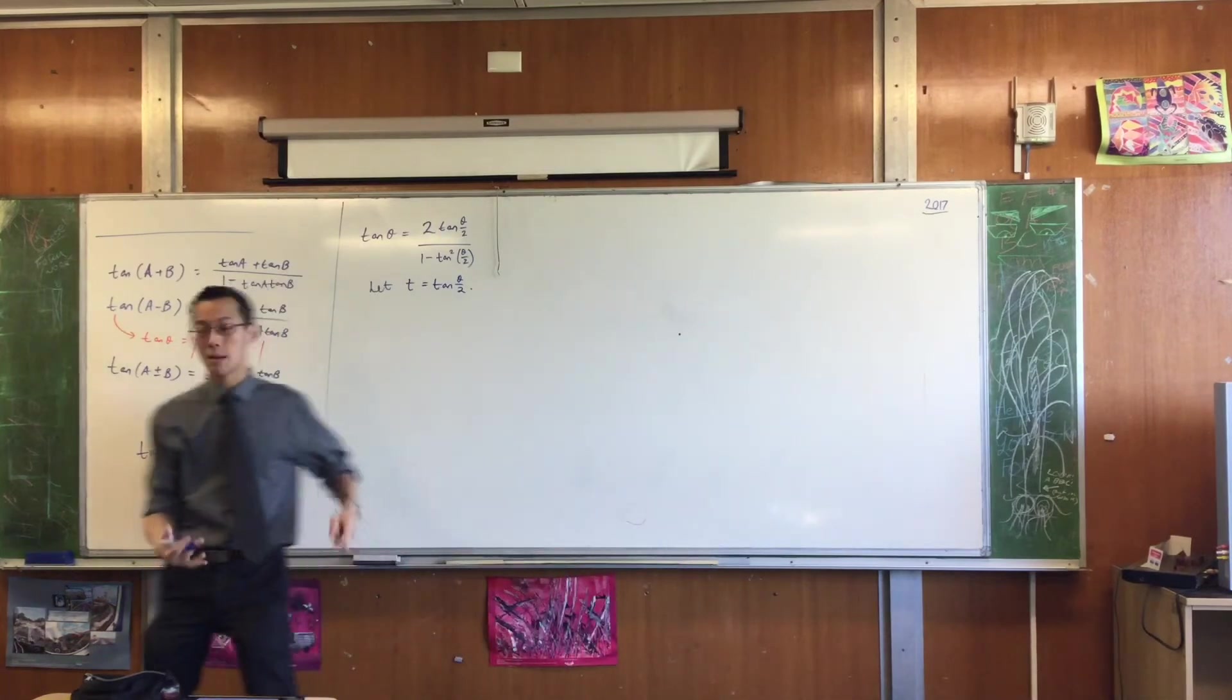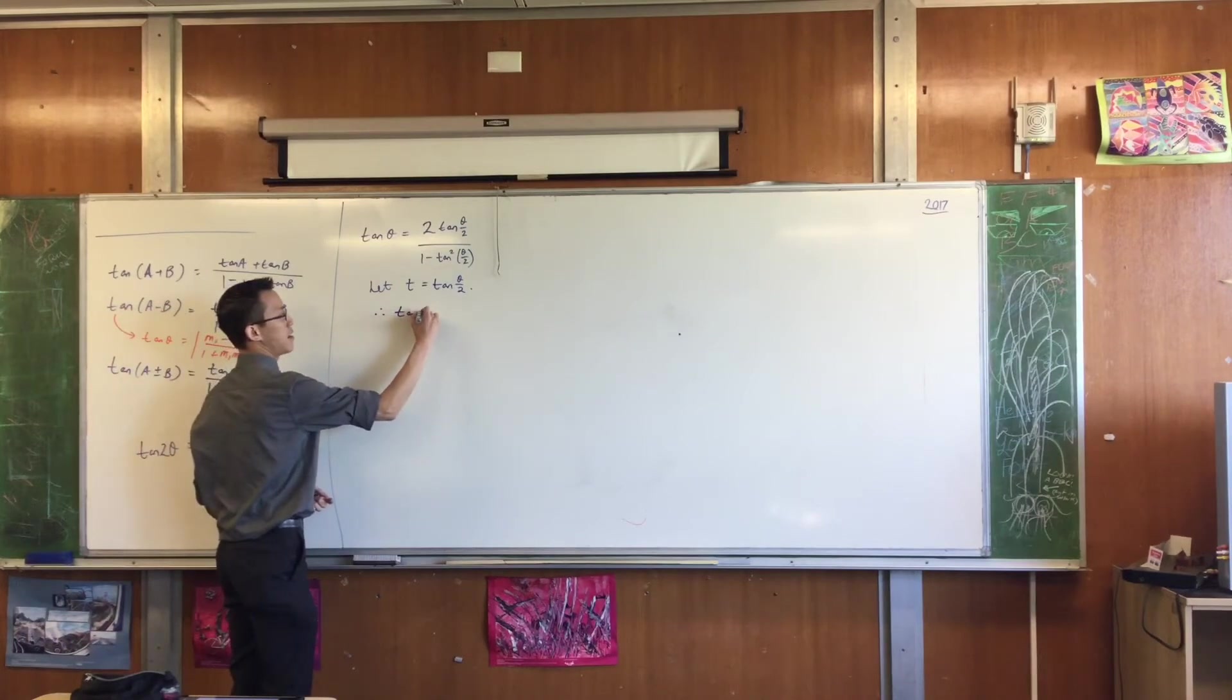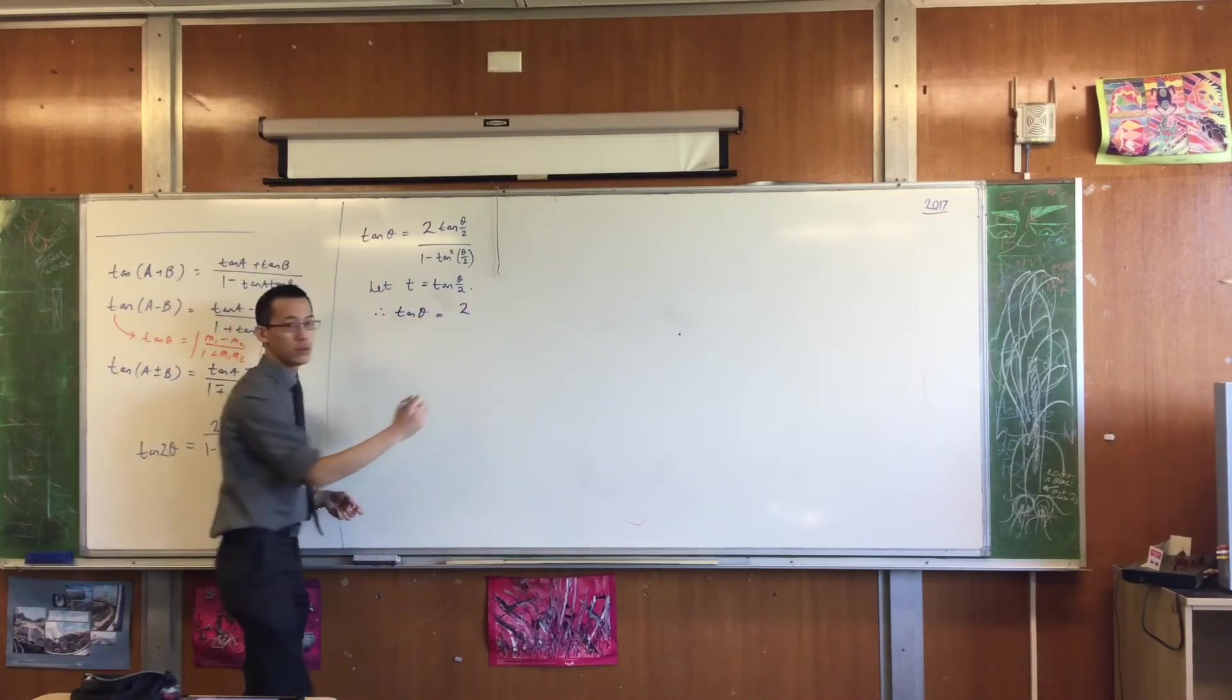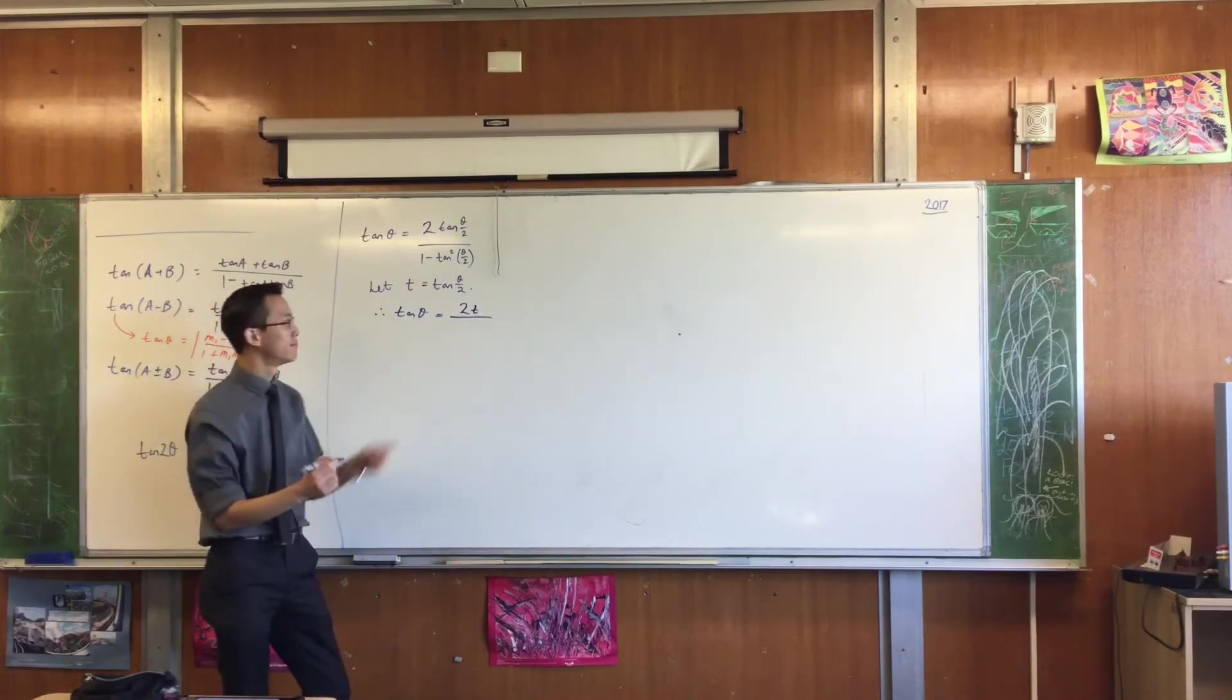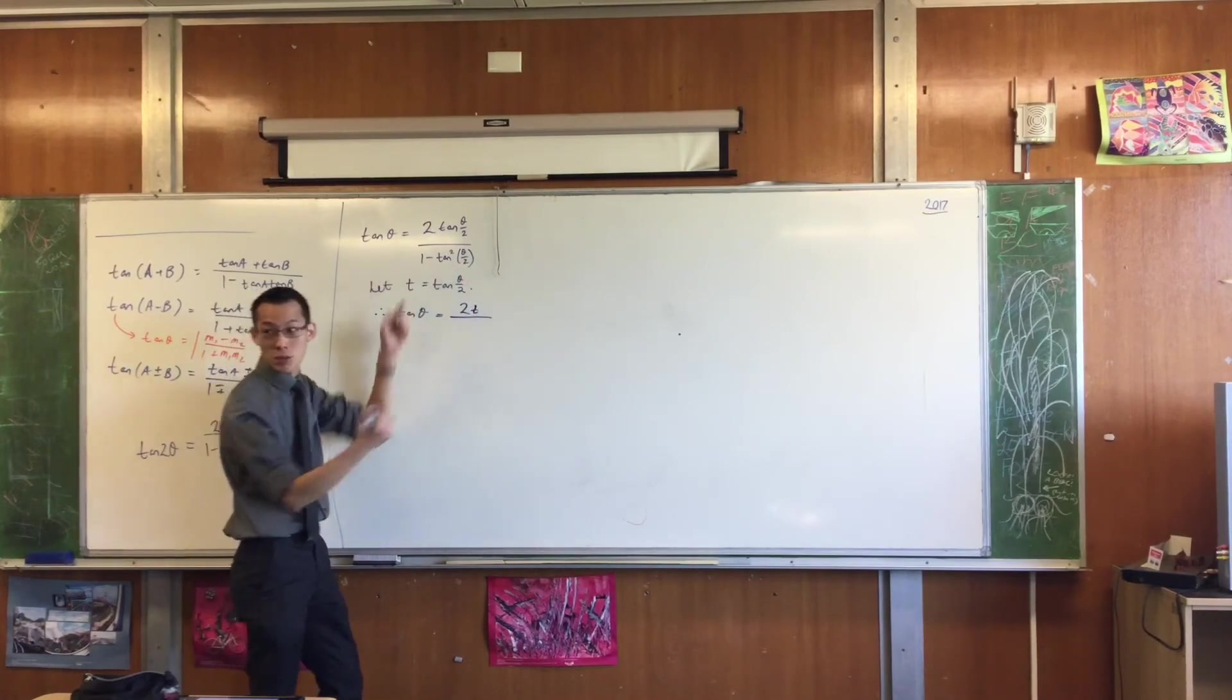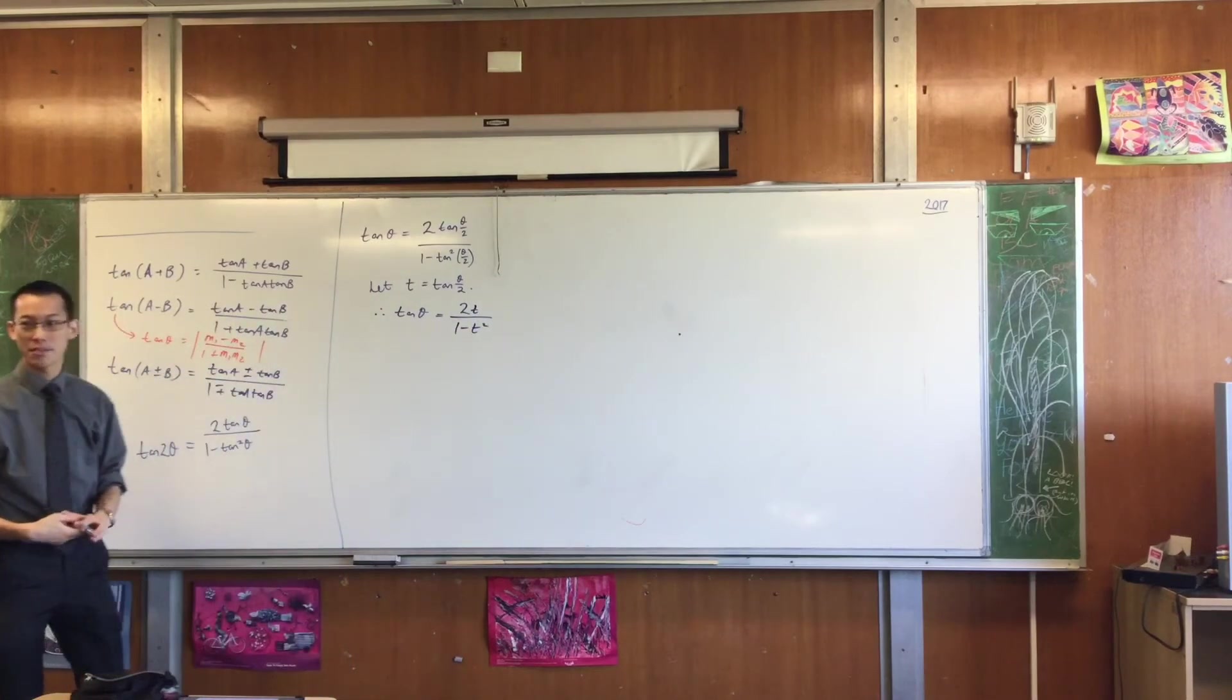So if you introduce this, I'm going to rewrite this first line as, therefore, tan θ equals 2T / (1 - T²). So you can see what I've done is I've dressed up this trigonometric identity as algebra.